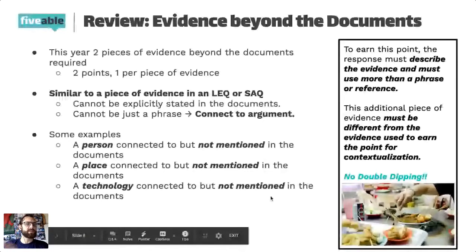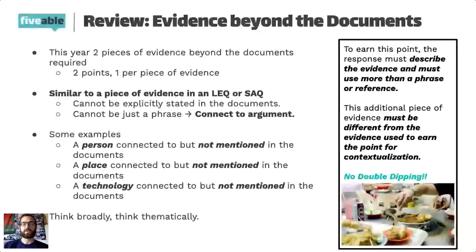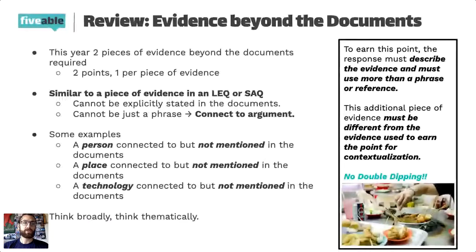Since we're thinking broadly and thematically, we can talk about things that are similar in other places. If we're talking about sailing technology and the documents discuss caravels — say you have a picture of a caravel — there are several other ship types in the course description, such as the Flucht and the Karak, that you could also mention. Those would be evidence beyond the documents, because they're not explicitly mentioned. Of course, you need to make sure they're explicitly part of your argument. Just remember: if you use something in contextualization, you can't use it again for evidence beyond the documents.